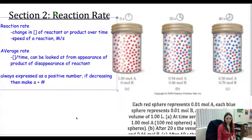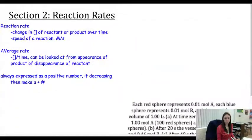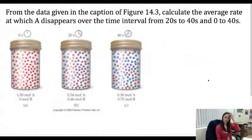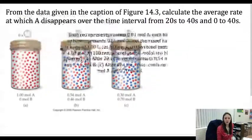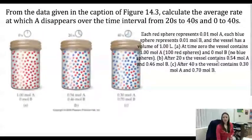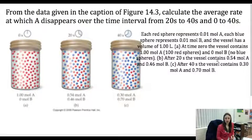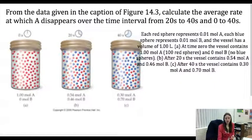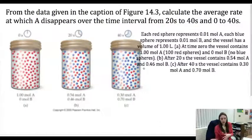We're going to look at a problem. Each red sphere represents 0.01 moles of A, each blue is 0.01 moles of B, and the vessel has a volume of one liter. At time zero, the vessel contains one mole of A and no moles of B. After 20 seconds, there's about half a mole of A and under half a mole of B. After 40 seconds, the vessel contains 0.3 moles of A and 0.7 moles of B. So we're going from A to B — A is changing itself into B, and we want to know the rate.